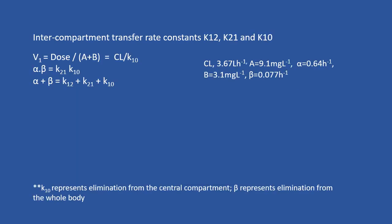The next part requires calculating the inter-compartment transfer rate constants k12, k21, and k10. You need to remember the three equations. One common question students ask is: what is the difference between k10 and beta? k10 represents the elimination from the central compartment, whereas beta represents the elimination from the whole body.